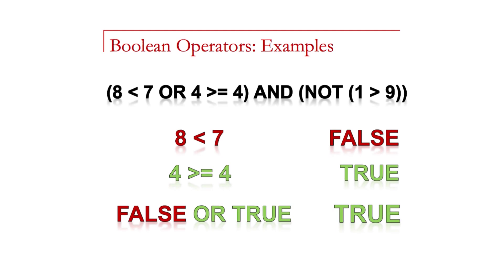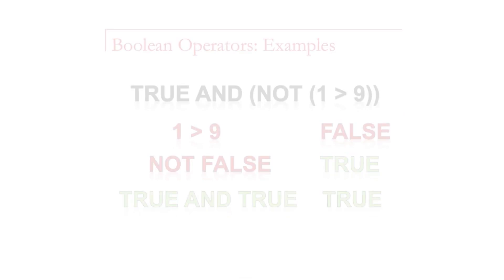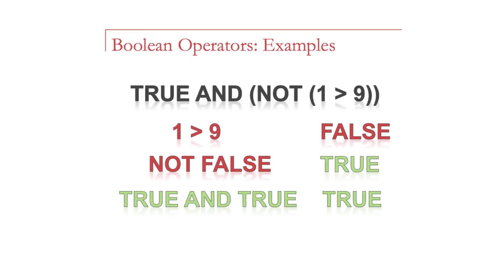One more is a little more complicated. Eight less than seven or four greater than or equal to four. So that's false or true, so that whole expression on the left is true. If we look at the expression on the right, we have true and not one greater than nine. One greater than nine is false. But then if I negate or not false, that becomes true. So this expression becomes true and true, which is true. So overall, I had true in this whole long expression, the entire expression is true.